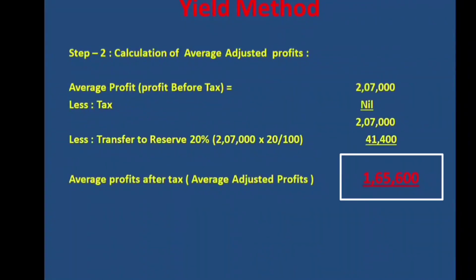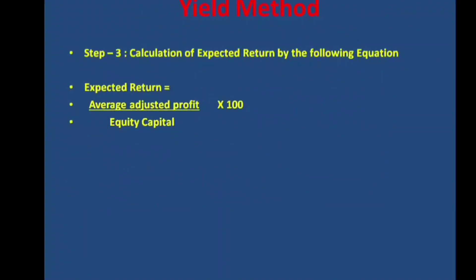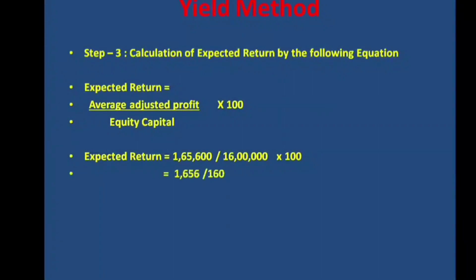Expected return = average adjusted profit ÷ equity capital × 100 = 2,16,000 ÷ 16,00,000 × 100 = 1,656 ÷ 160 = 10.35%. So the expected rate of return is 10.35%.